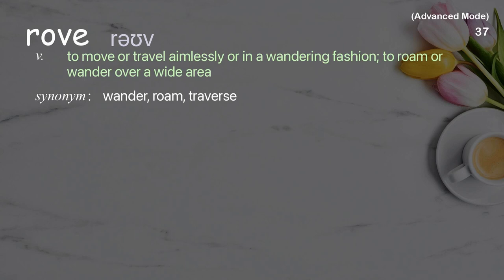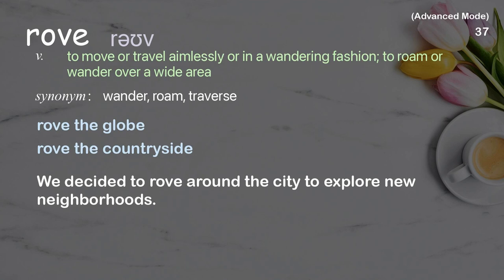Rove: To move or travel aimlessly or in a wandering fashion; to roam or wander over a wide area. Examples: rove the globe, rove the countryside. We decided to rove around the city to explore new neighborhoods.